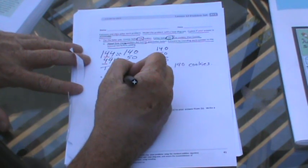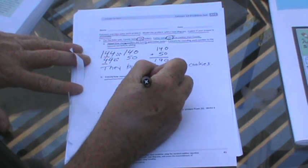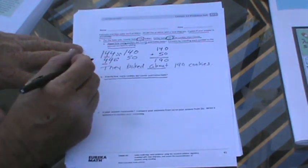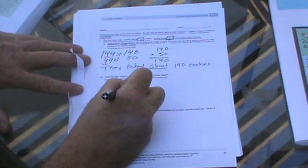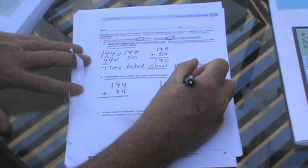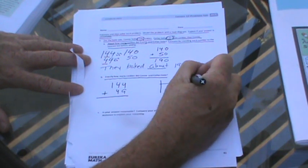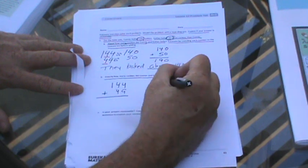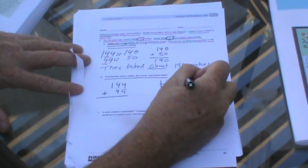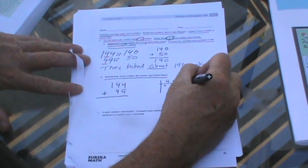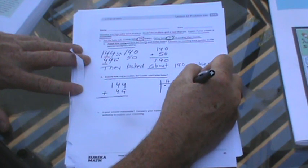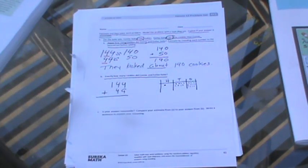Now it says, exactly how many cookies did Connie and Esther bake? So 144 plus 49. If you want, you can make a place value chart: ones, tens, hundreds. We have 144 and 49. We could use these to regroup and make it clear, but we're getting pretty good at addition.